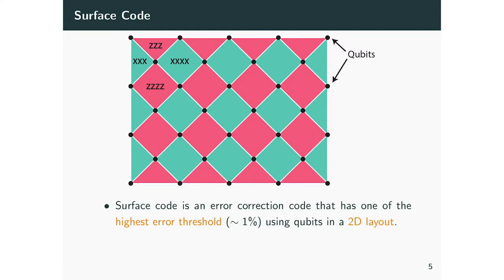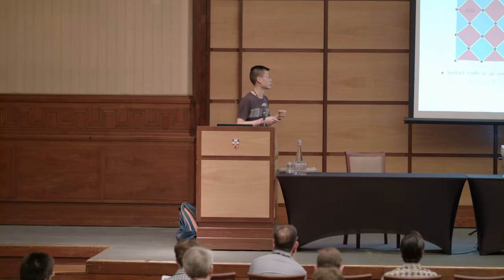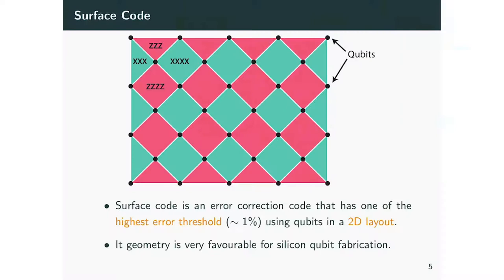The surface code has a high threshold and a 2D layout. As shown here, the black dots are the data qubits, while the different colored plaquettes are the X and Z parity checks we need to perform on the data qubits. The surface code is also very favorable for silicon qubits because this kind of grid 2D perpendicular layout is very compatible with the commercial fabrication process.